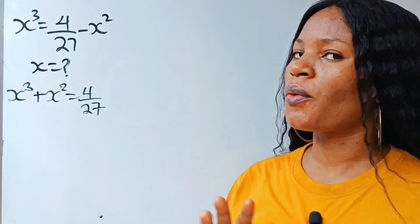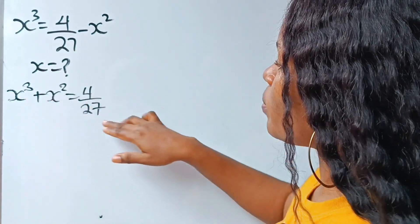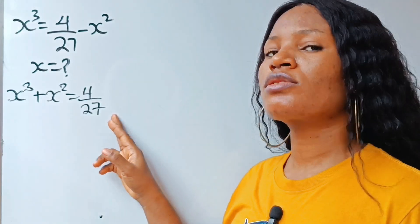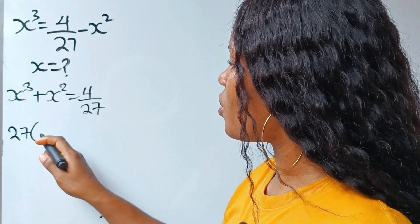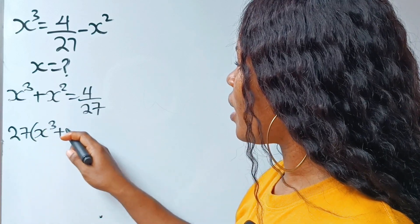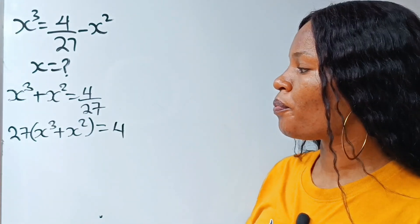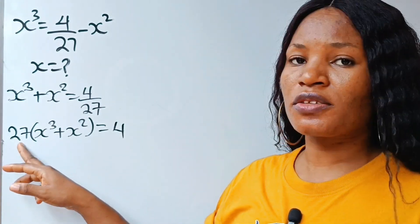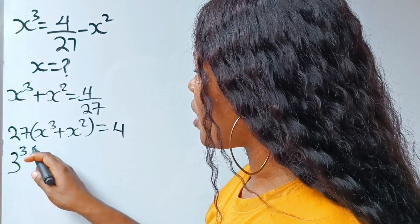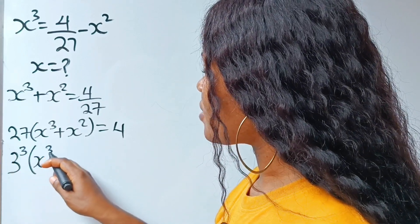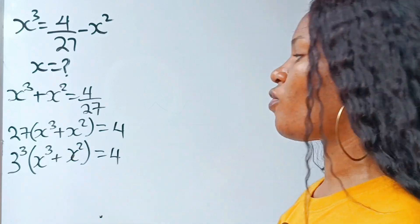All right, we need to work with this equation. So to simplify, let's multiply through by 27. If we do that, we are going to have 27 multiplied by x to the power of 3 plus x squared is equal to 4. In exponent form, 27 is the same thing as 3 to the power of 3, multiplied by x to the power of 3 plus x squared is equal to 4.